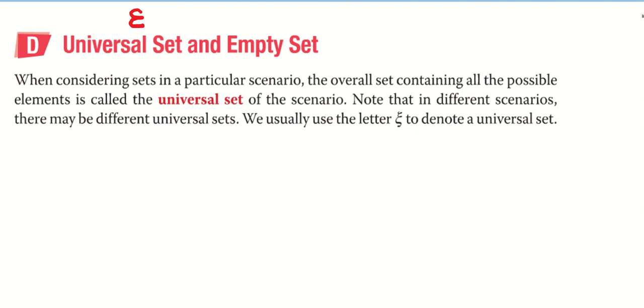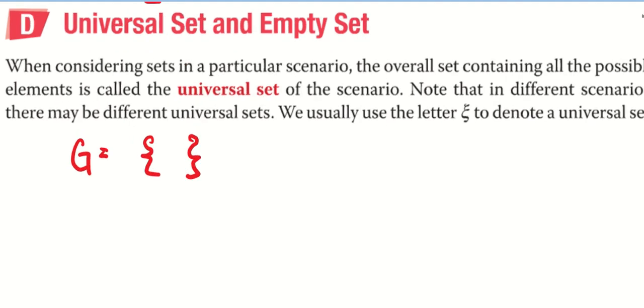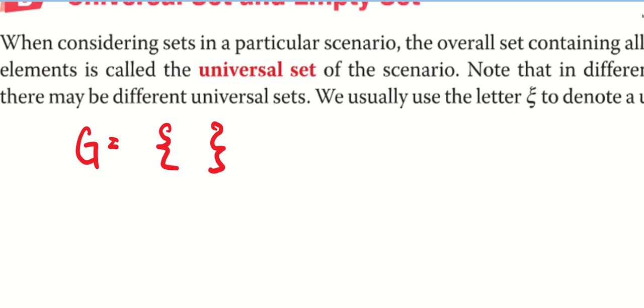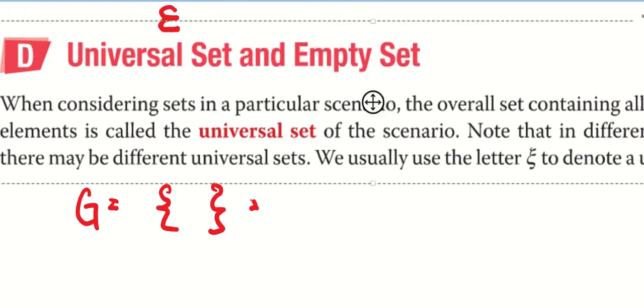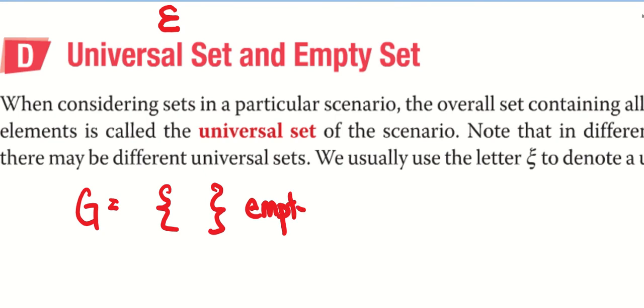Zero means zero is inside the set, so I'm going to show you the difference now. Look at my set G. Is there anything inside? When I write a curly bracket with nothing inside, this is known as an empty set, nothing inside.